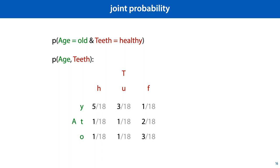The joint distribution is the most important distribution. It tells us the probability of each atomic event — each event that contains a single element in our sample space. Since we have two discrete random variables in our example, we can specify the joint distribution in a small table. Each cell in this table represents an element of our sample space, an atomic event, and the probabilities of these nine events sum to 1. Note that the function where we specify that we are interested in the event where the age is old and the teeth are healthy refers to a single value between 0 and 1, specifically 1 over 18. The function below that, where age and teeth are not specified, does not refer to a single value because the variables are not instantiated. It represents a function of two variables, specifically the function defined by this table.